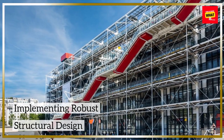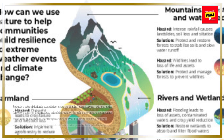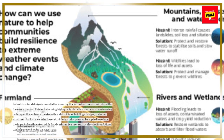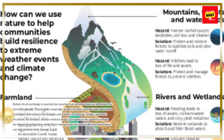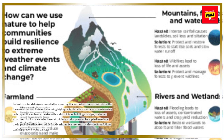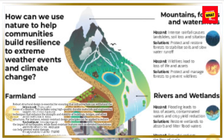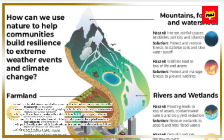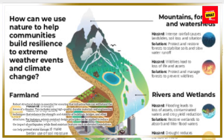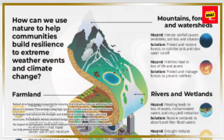Implementing Robust Structural Design. Robust structural design is essential for ensuring that infrastructure can withstand the forces of a disaster. This includes using high-quality, durable materials and engineering techniques that enhance the strength and stability of buildings, bridges, and other structures. For instance, seismic-resistant design principles can be applied to reduce the impact of earthquakes, while flood-resistant features such as elevated foundations can help prevent water damage.